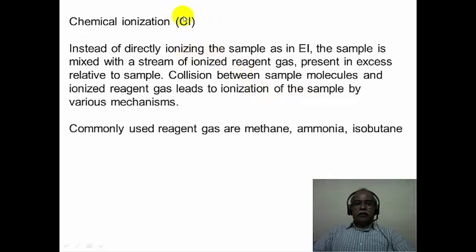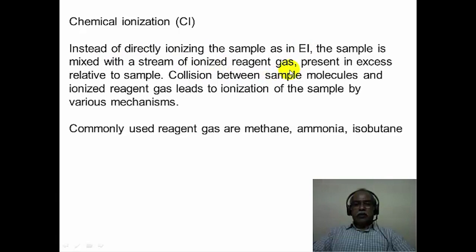Chemical ionization is relatively speaking a softer ionization technique. In case the electron impact ionization mass spectrum does not give the molecular ion peak, one can rely on chemical ionization mass spectrometry to detect the molecular ion peak. Instead of directly bombarding molecules with high energy electrons, a stream of ionized gas is used. A reagent gas gets ionized by bombardment with high energy electrons first, and the ionized gas molecules in turn react with the substrate. Ionization takes place by a simple collisional process between the sample molecule and the ionized gas. The commonly used reagent gases are methane, ammonia, and isobutane.